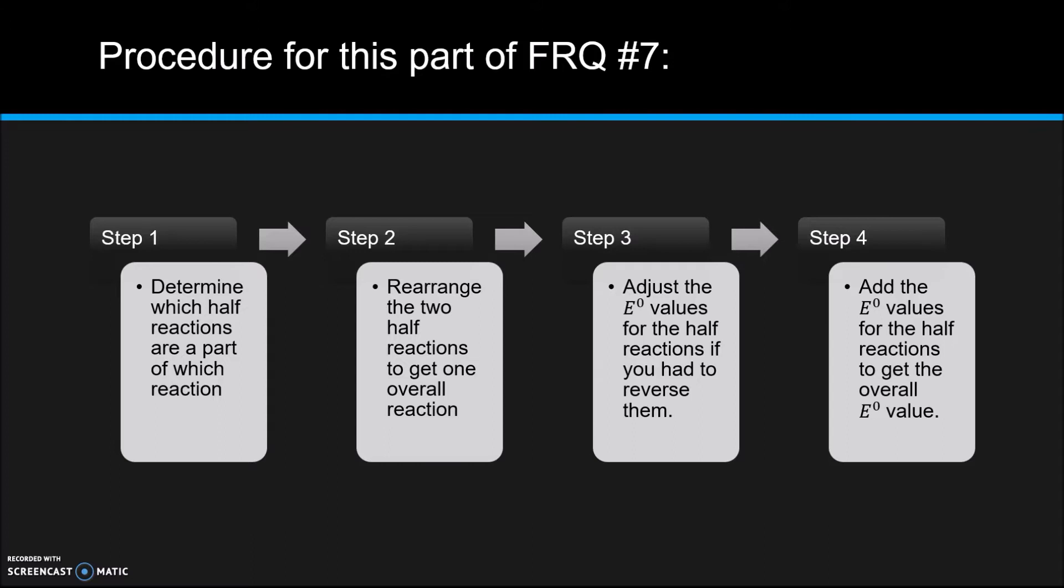The first step we can do is to determine which half reactions are part of which overall reaction. So remember, they gave us four half reactions, which means that two of those half reactions have to make up the dichromate overall reaction. Then we're going to rearrange the two half reactions to get the overall reaction. So what we're going to do is flip a reaction if we need to, we're going to multiply a reaction by some coefficient if we have to get the electrons to cancel when we add up the two half reactions.